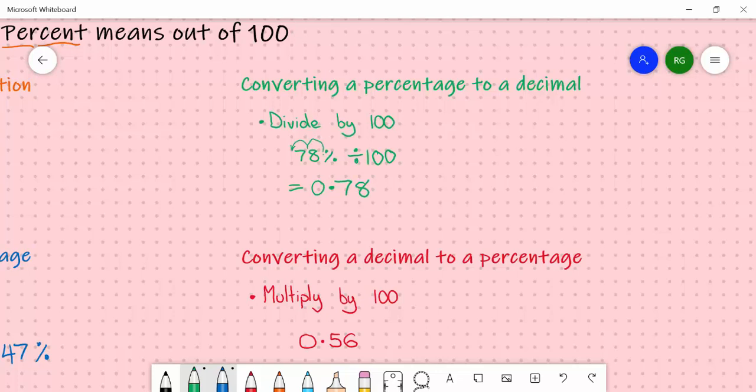If you'd like to work back from 100% being one whole, then you can see how 78% is a little less than one whole.